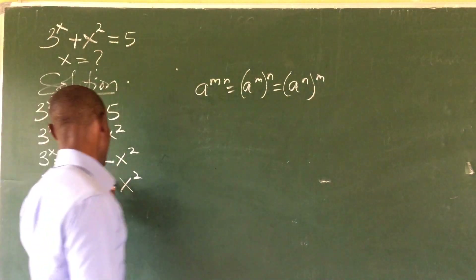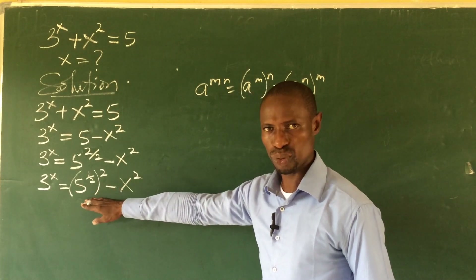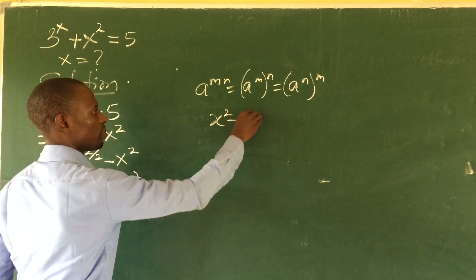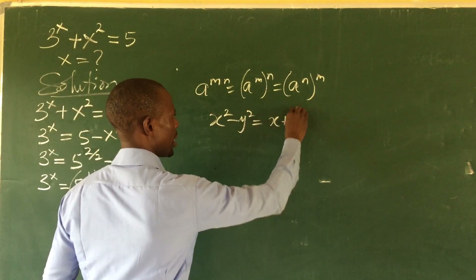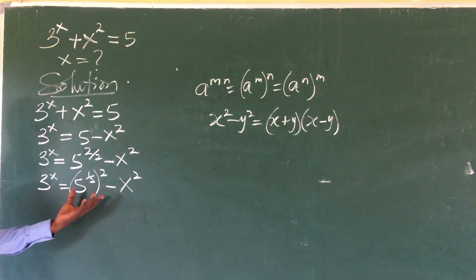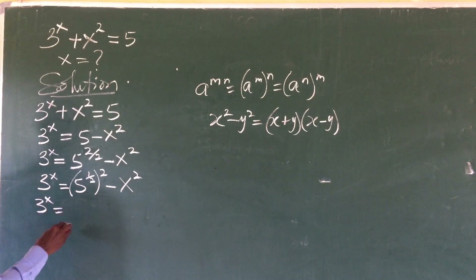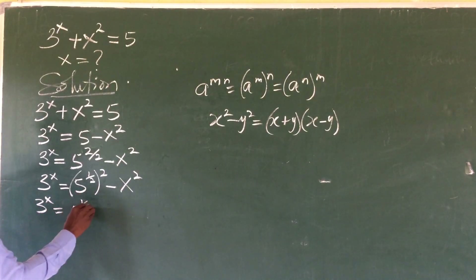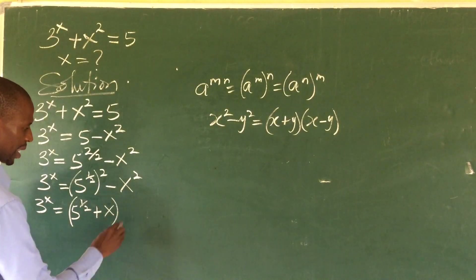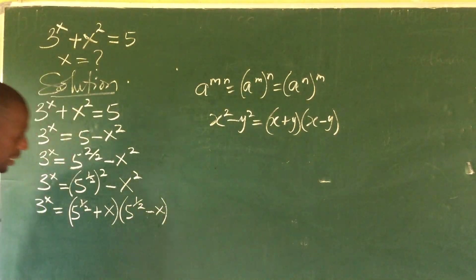We succeeded in bringing 2 in here. Now we apply the difference of two squares. We know that x² - y² = (x + y)(x - y). Applying this rule, we get 3^x = (5^(1/2) + x)(5^(1/2) - x).